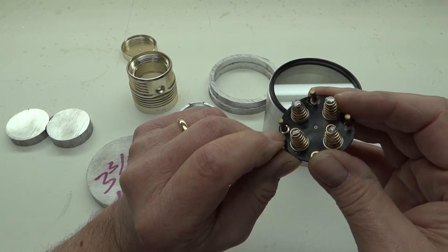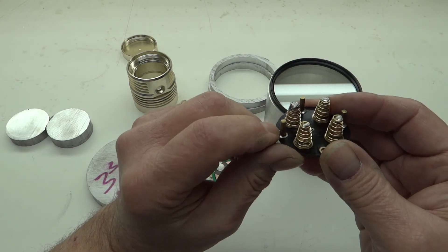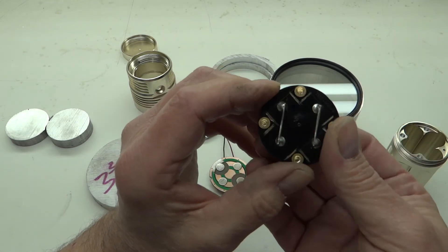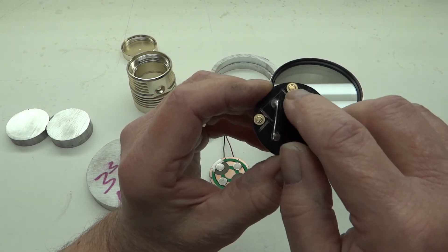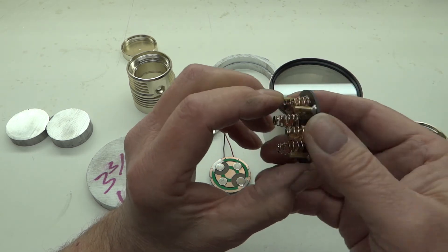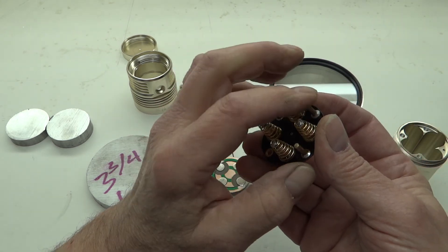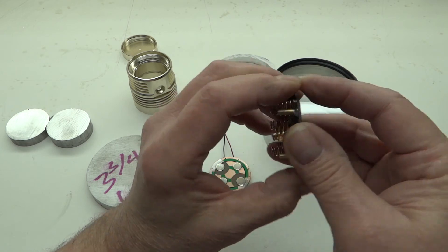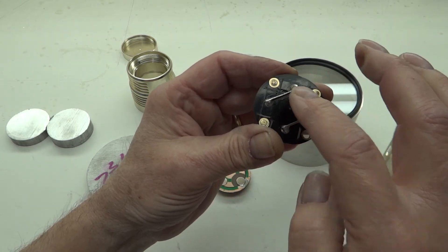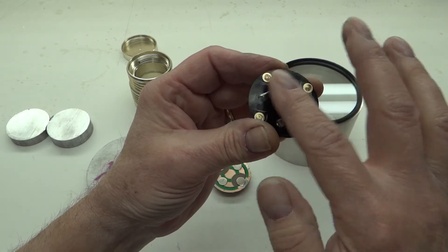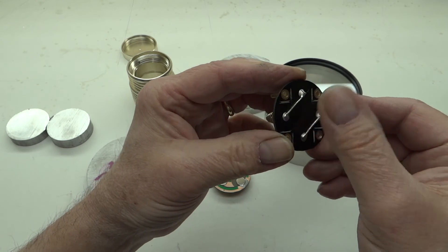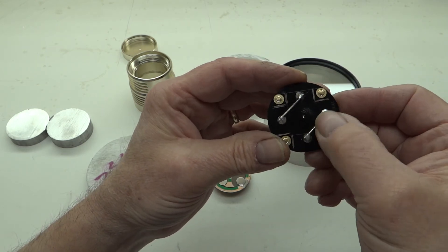And then like I say I have the 2s format for the batteries back here by soldering these wires on. And then I braided the springs with the copper braid.